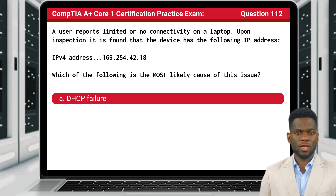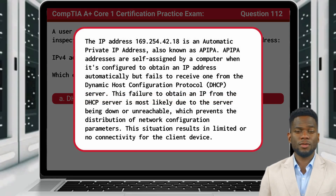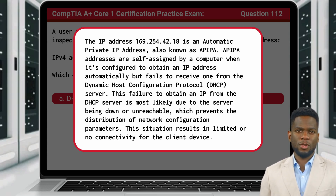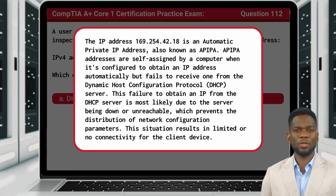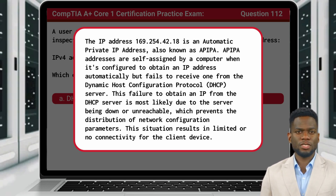The answer is A: DHCP failure. The IP address 169.254.42.18 is an Automatic Private IP Address, also known as an APIPA. APIPA addresses are self-assigned by a computer when it's configured to obtain an IP address automatically but fails to receive one from the DHCP server. This failure is most likely due to the server being down or unreachable, which prevents the distribution of network configuration parameters. This situation results in limited or no connectivity for the client device.